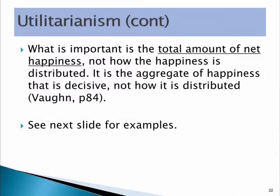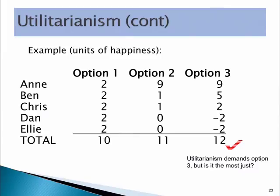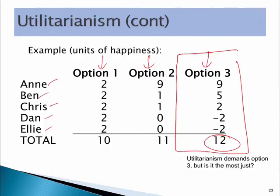Just to emphasize: it's the total amount of happiness, not the maximum number of people who are made happy. In our example with Anne, Ben, Chris, Dan, and Ellie, who have three options, the one with the greatest net happiness is option three. Even though Dan and Ellie are made worse off, Anne and Ben are made so much better off that it outweighs the negative to Dan and Ellie. So utilitarianism in its classical form suggests the ethical act is option three.